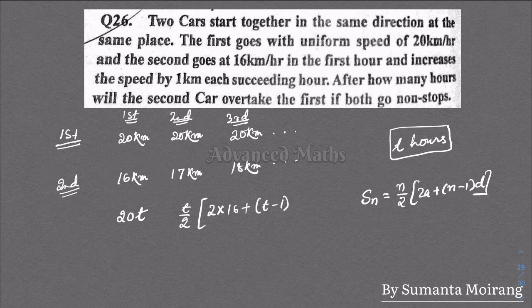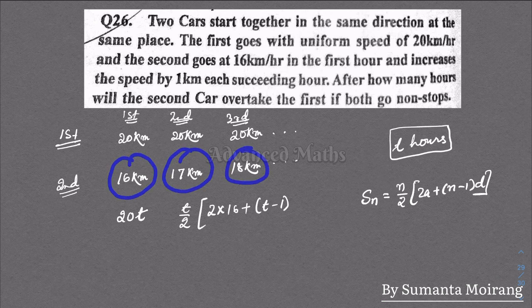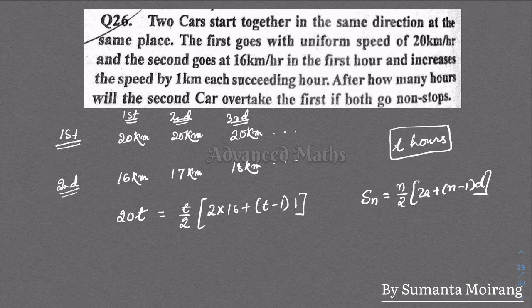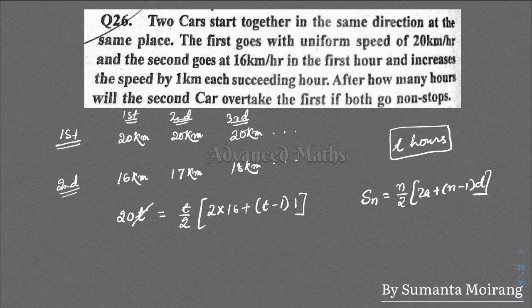The sequence is 16, 17, 18, so the common difference d is 1. We're looking for how many hours.